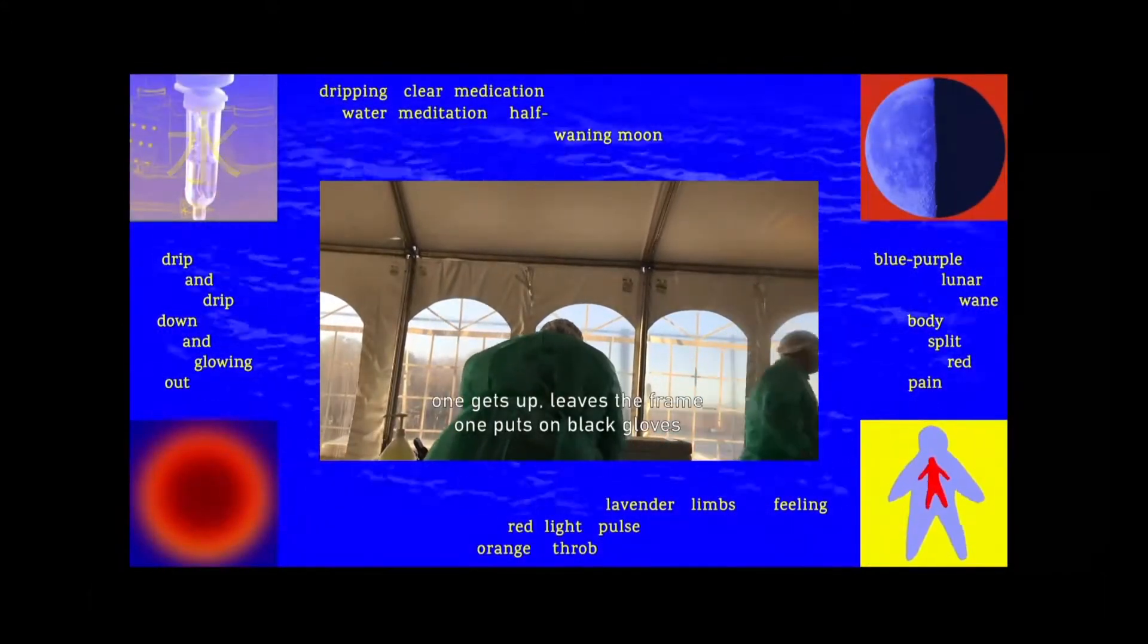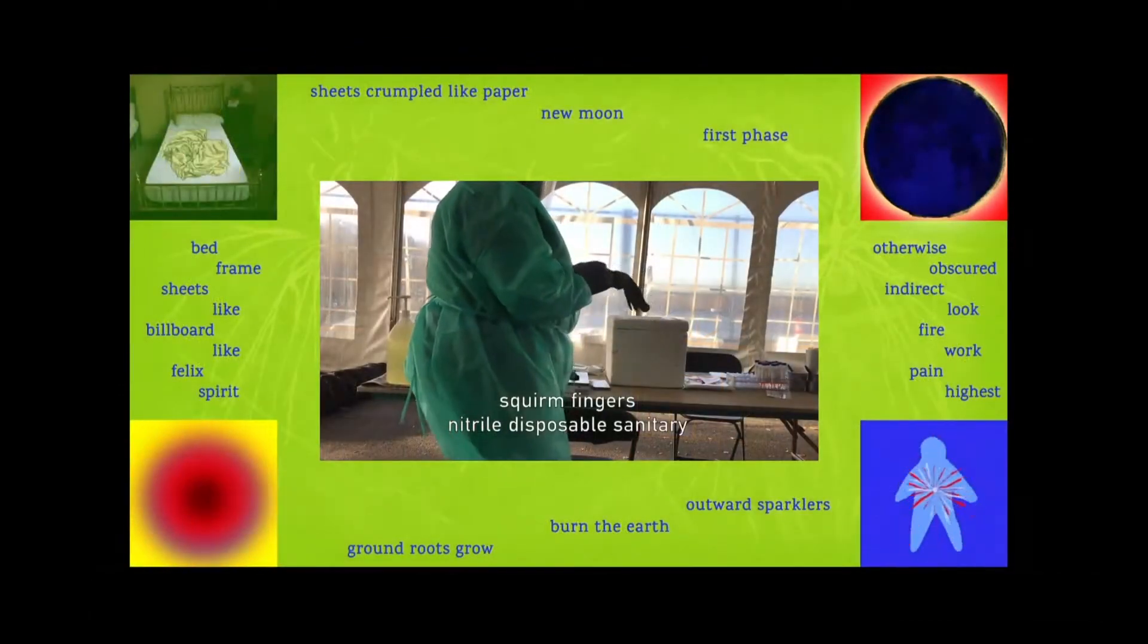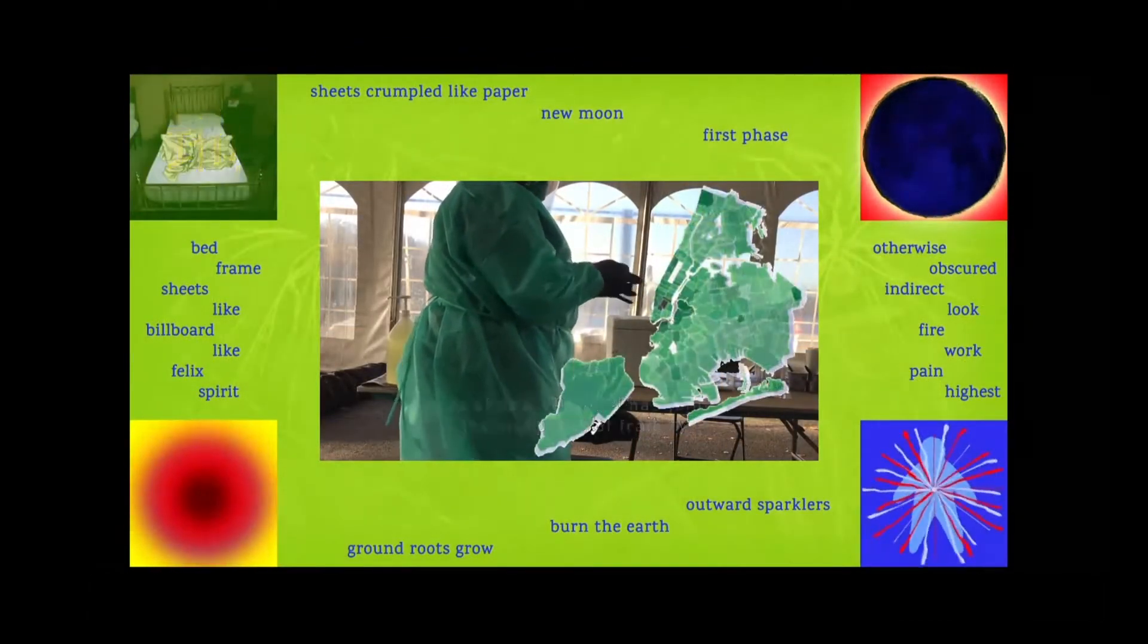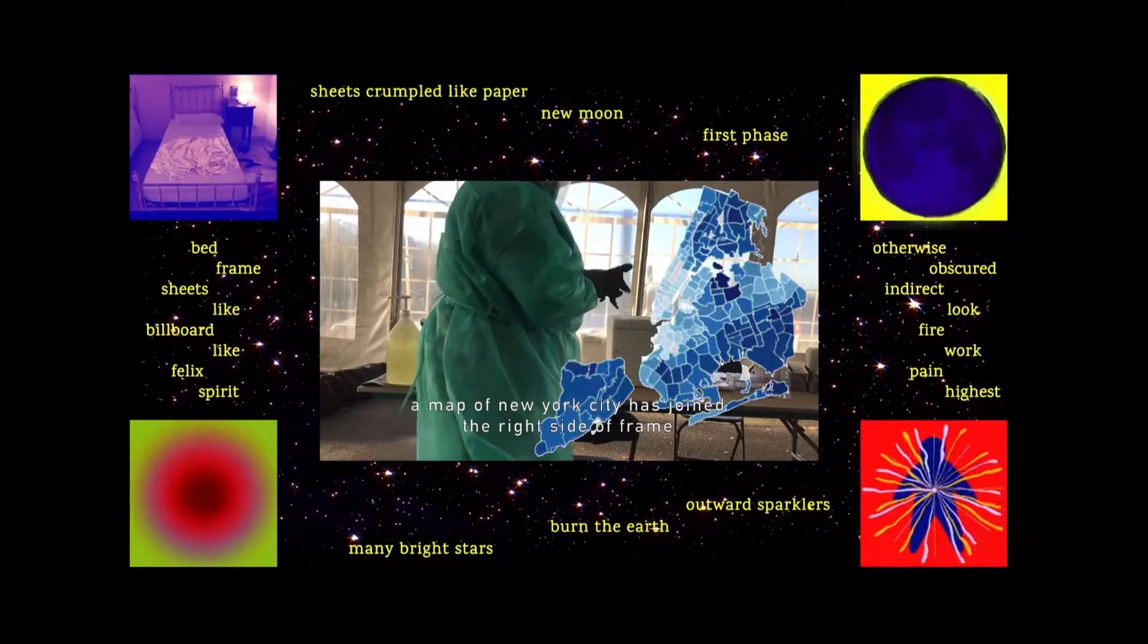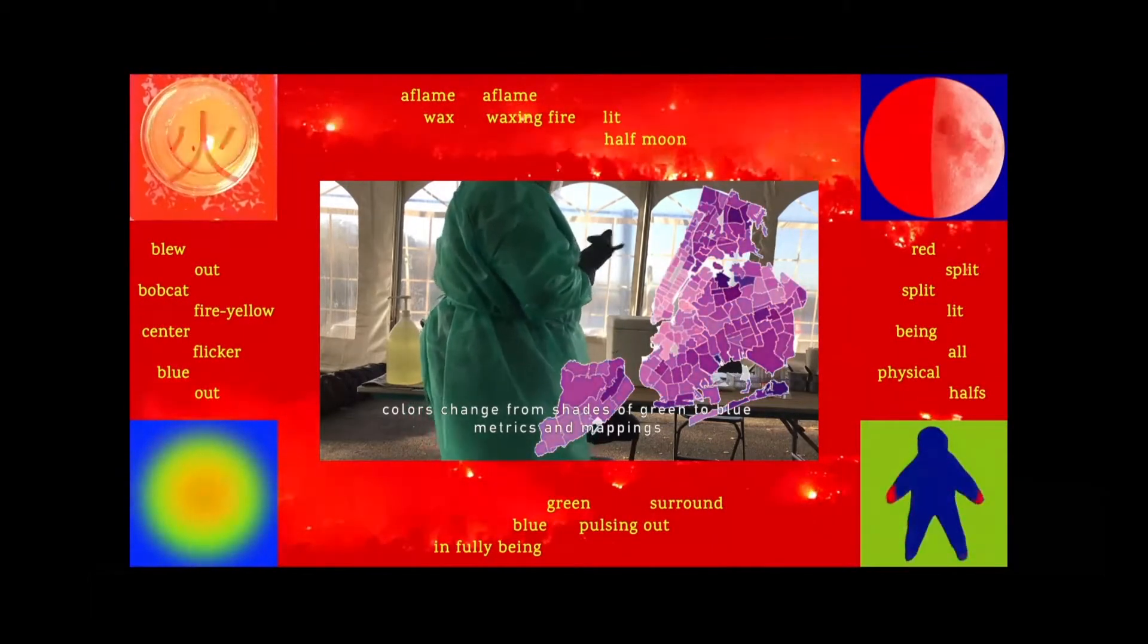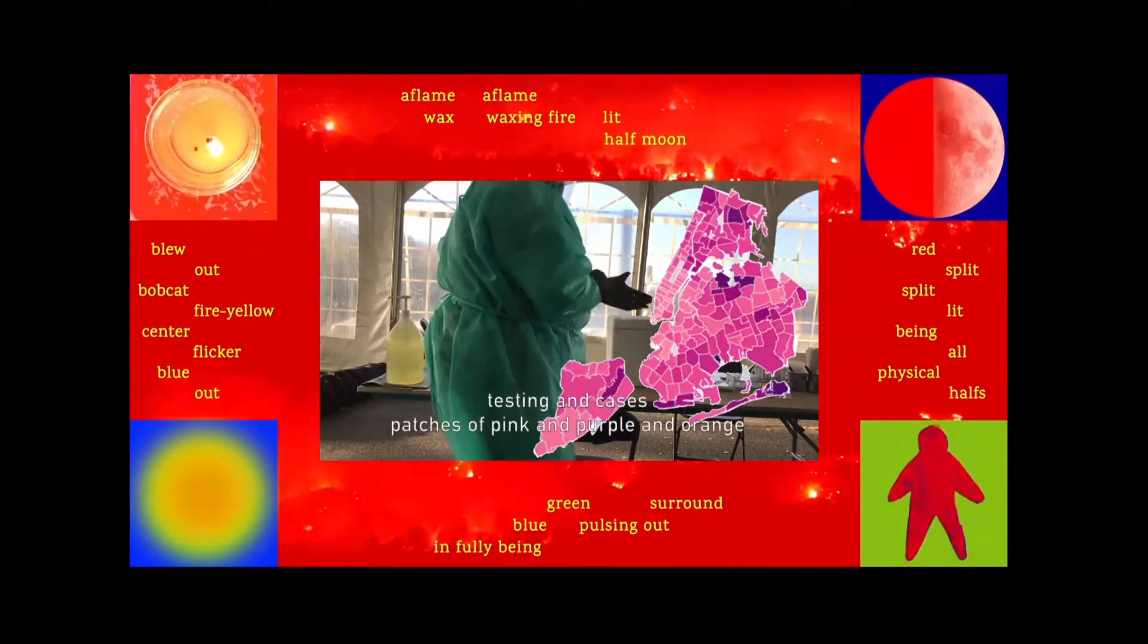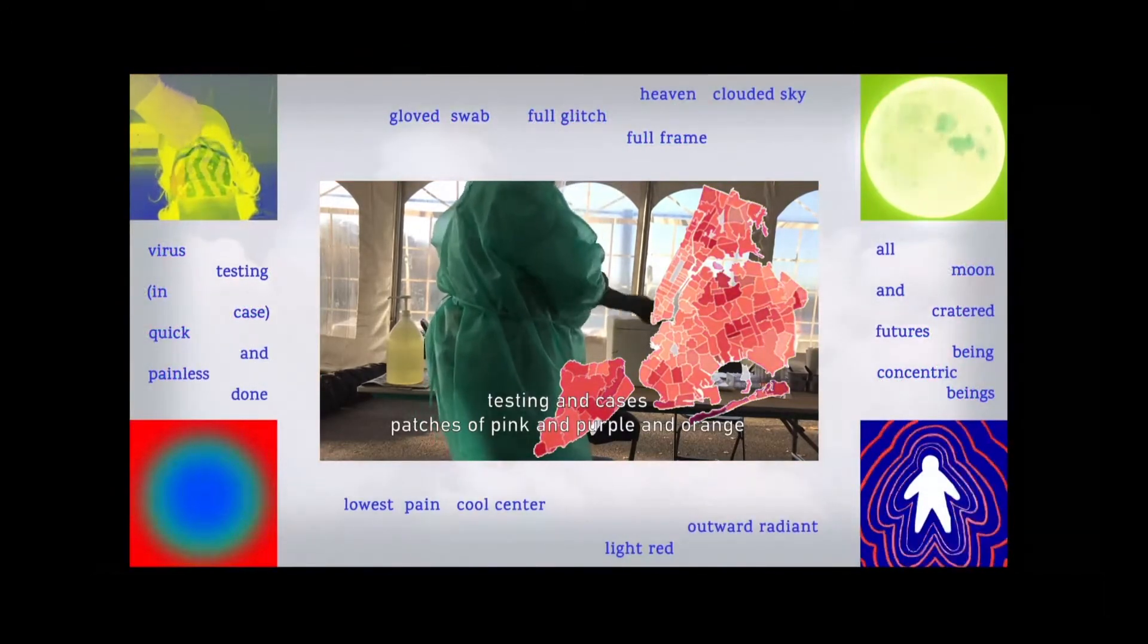One gets up, leaves the frame. One puts on black gloves, squirm fingers, nitrile, disposable, sanitary. A map of New York City has joined the right side of the frame. Colors change from shades of green to blue. Metrics and mappings, testing and cases, patches of pink and purple and orange.